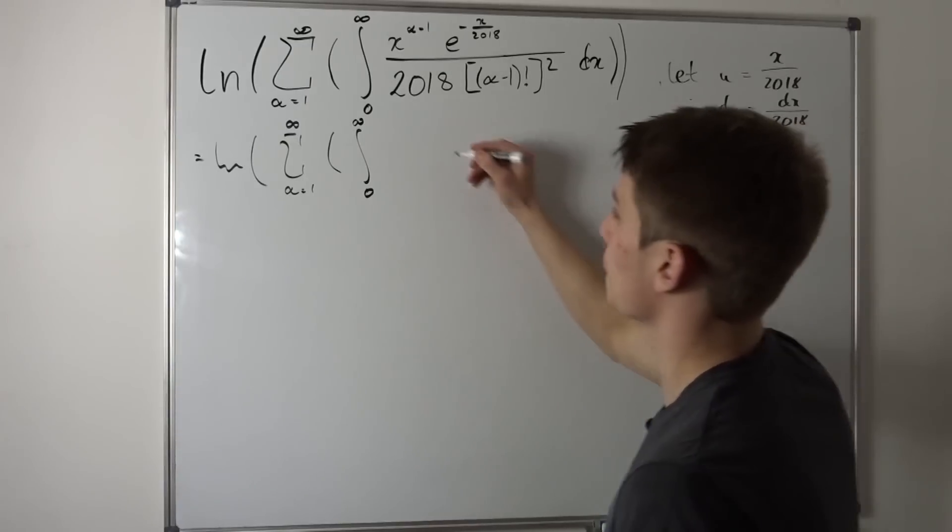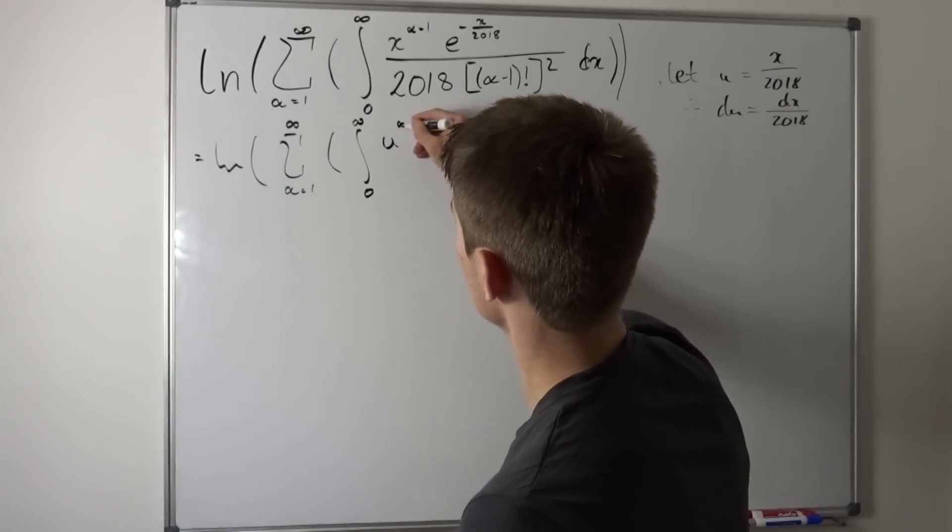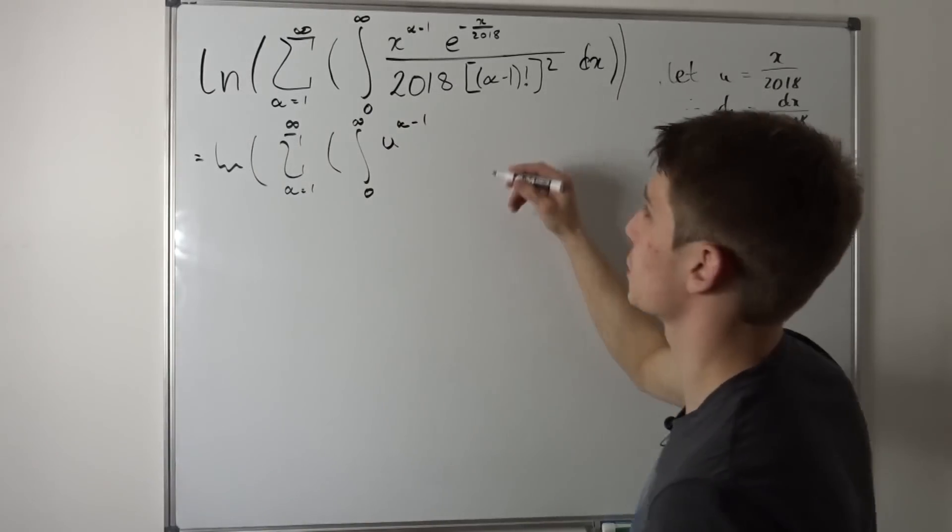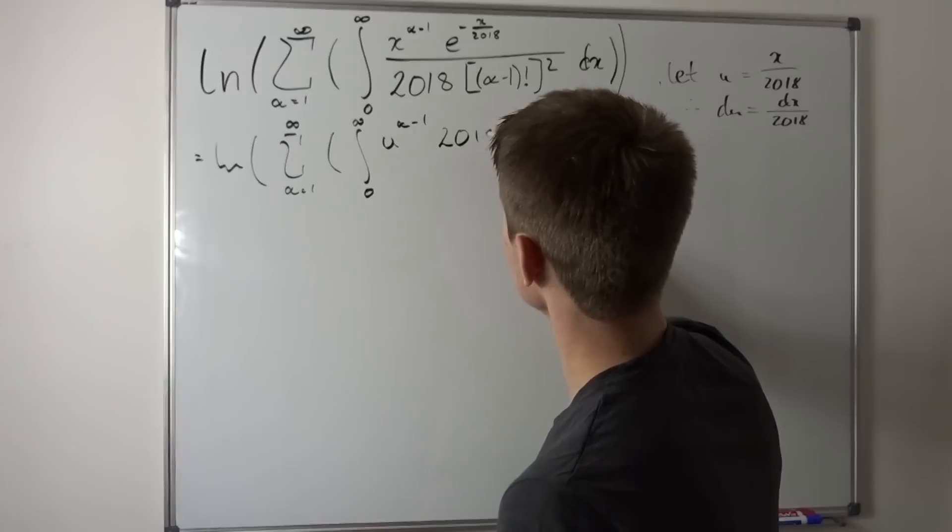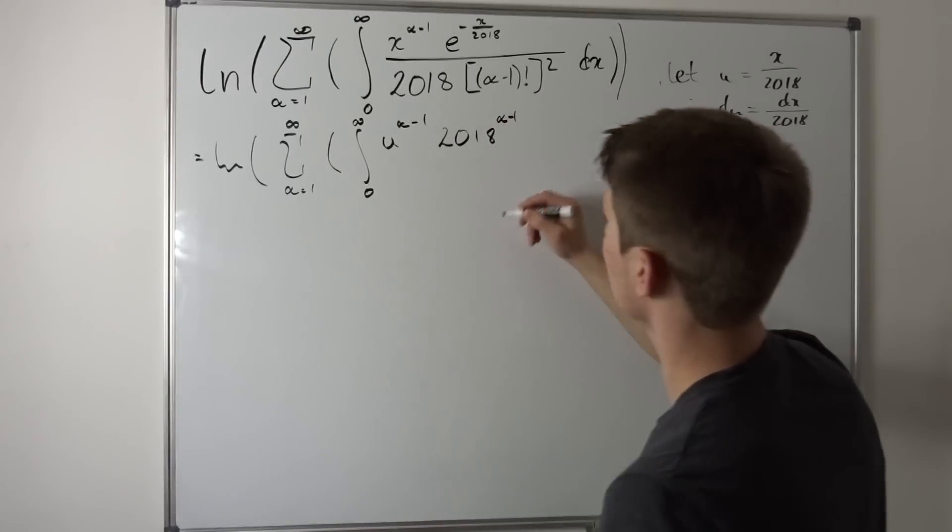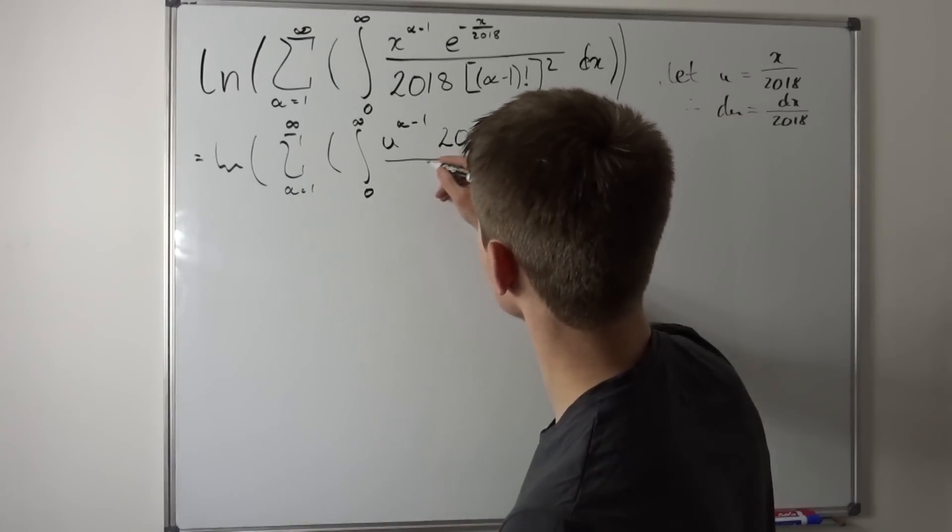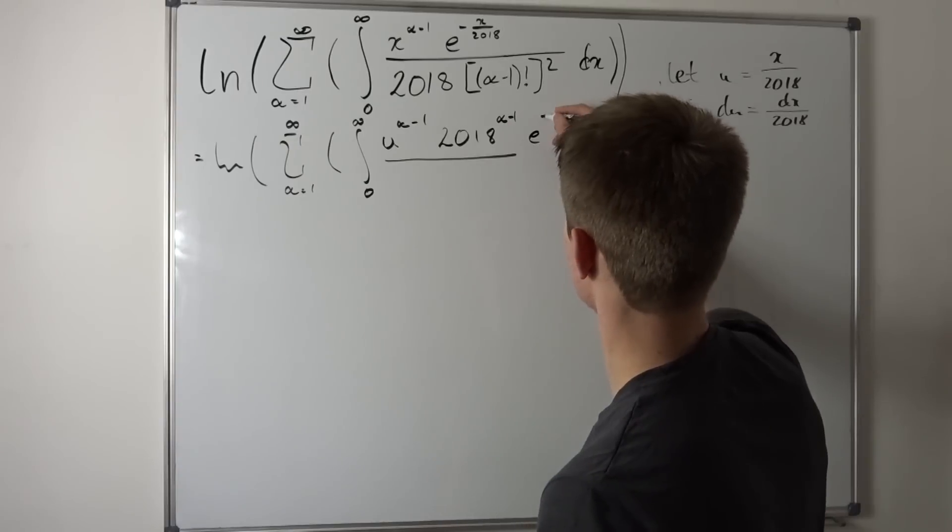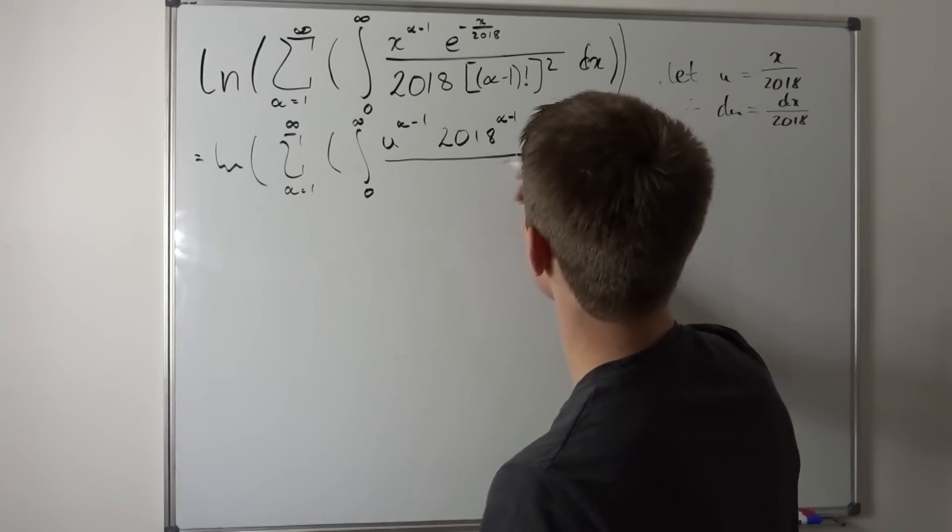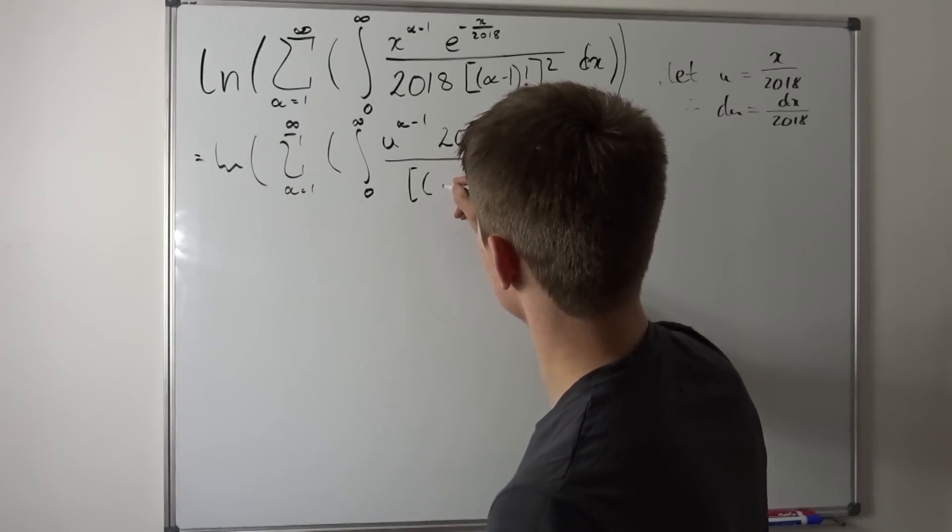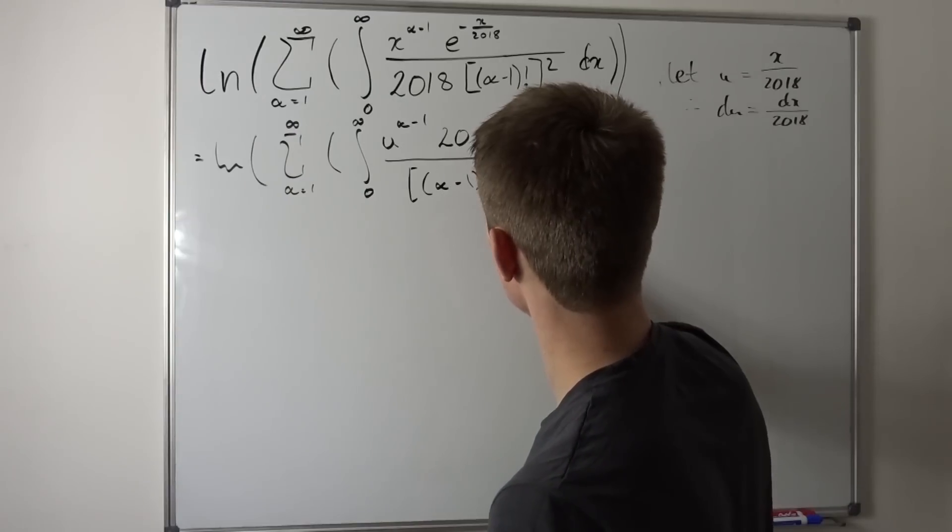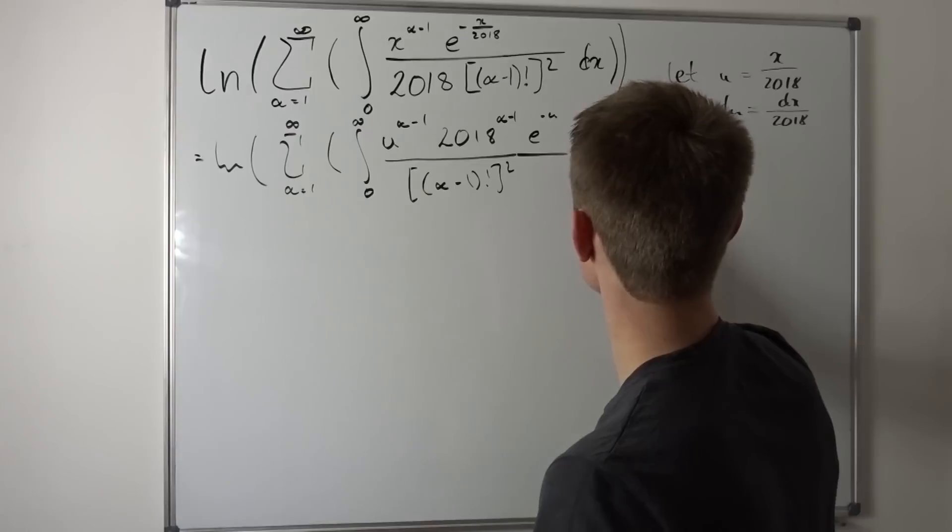This stays the same and we plug in x now. So that's u to the alpha minus 1 times 2018 to the alpha minus 1, and then over, don't forget the e to the minus u, and over, so this is alpha minus 1 factorial, but the whole thing is squared, du.